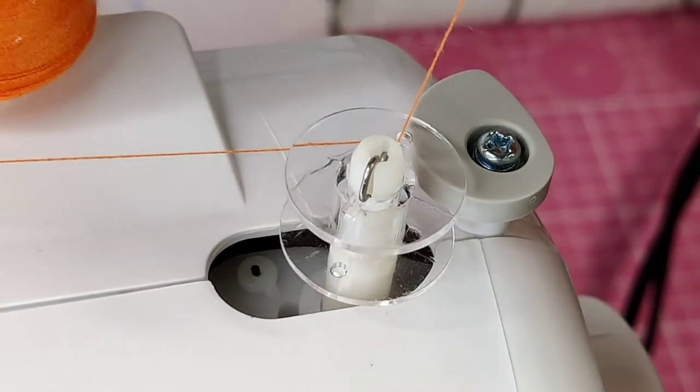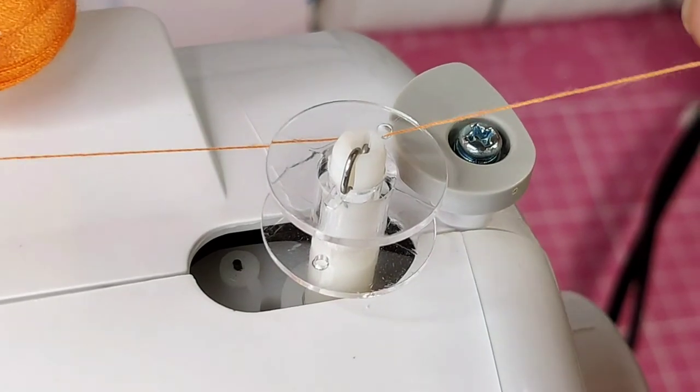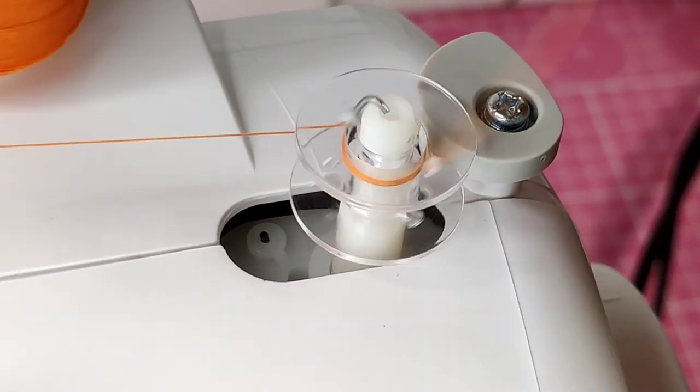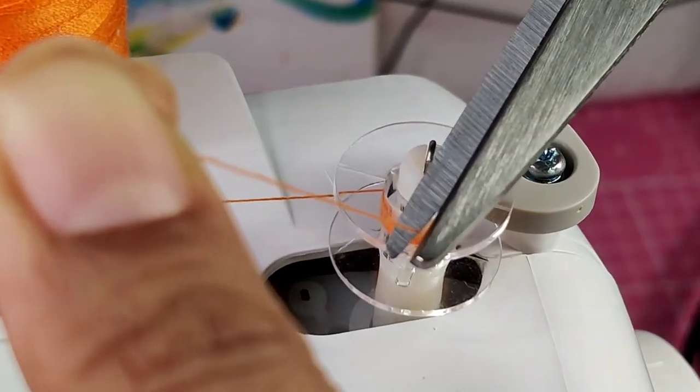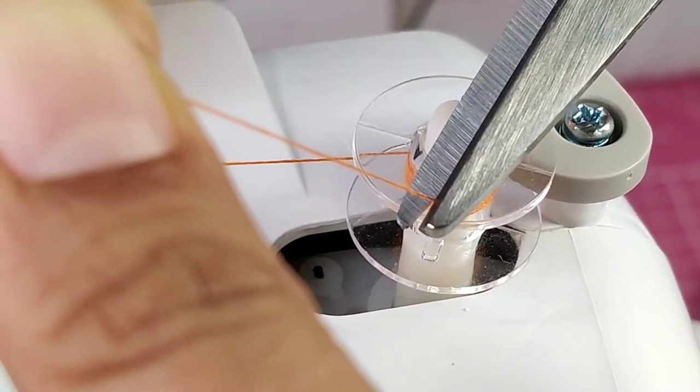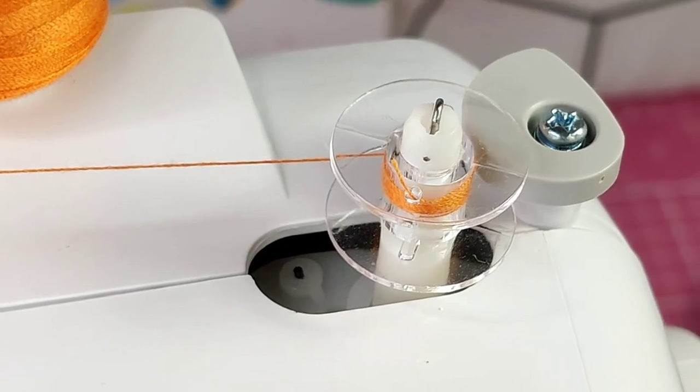Once that is done, you can start winding the thread by pressing the foot controller. Make sure you hold a few centimeters of thread at the top of the bobbin. Wind the thread a few times and stop. Cut the excess thread near to the bobbin hole and continue winding the bobbin until it's full.